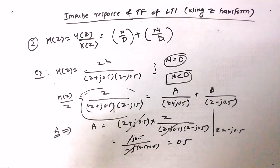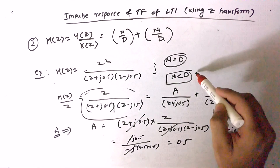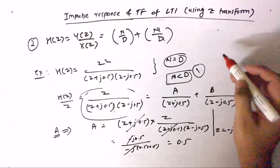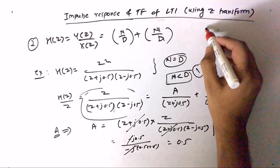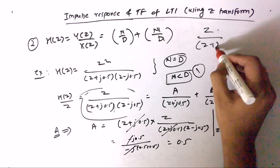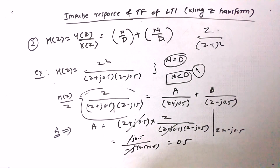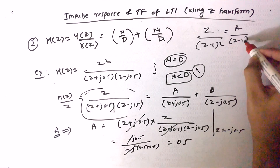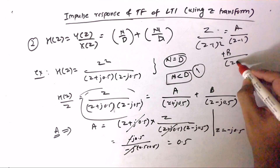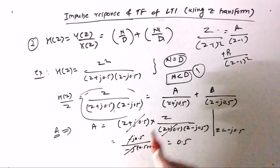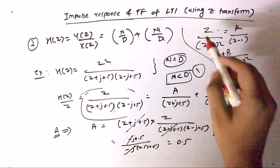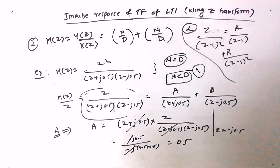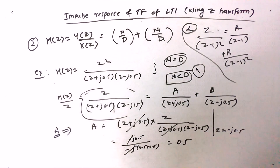That was the first type of partial fraction. Another type can be Z / (Z−1)², for which you use A/(Z−1) + B/(Z−1)². These are two varieties of partial fractions generally asked in exams.